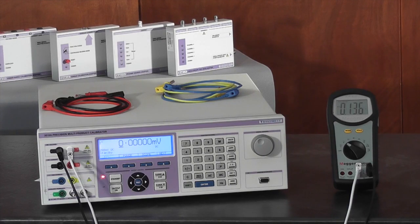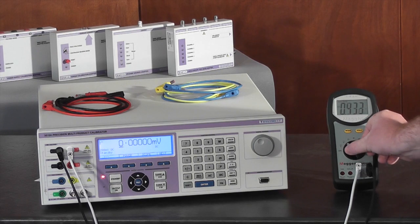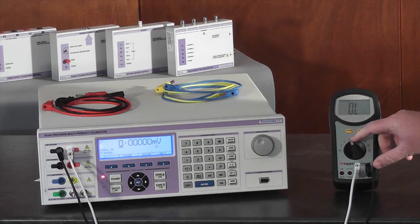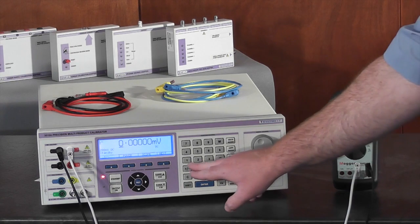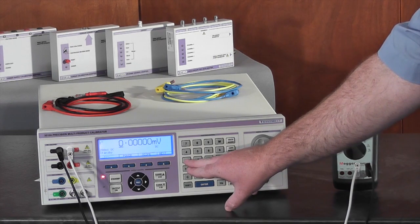Sourcing resistance from the 3000 series calibrator can be done as either 2 wire or 4 wire passive and simulated resistance. Passive resistance offers the best accuracy. First, switch the multimeter to the ohms mode and enter the required test value, for example 100 ohms.